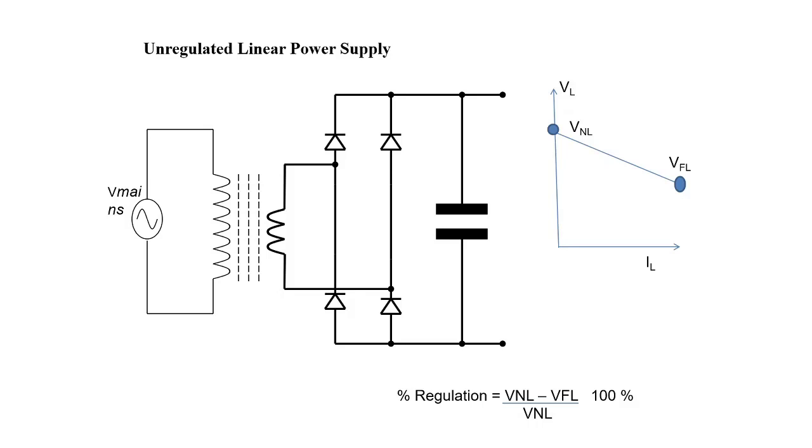Let us see the unregulated power supply circuit diagram. Unregulated power supply circuit diagram will have a transformer, a rectifier and then a capacitor. The transformer, as usual, will do the function of step-down and isolation. The rectifier here is a bridge rectifier and then capacitor is used as a filter.